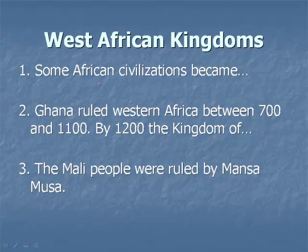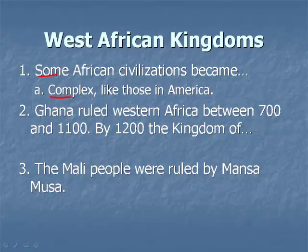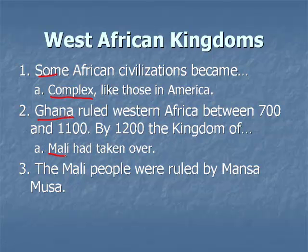Some African civilizations became complex, like those in America. For example, Ghana ruled Africa between 700 and 1100 A.D., and then by 1200 A.D., the kingdom of Mali had taken over. The Mali people were ruled by Mansa Musa, and he can be found in your book in section 2 of chapter 1. We're not going to get too deep into him right now.